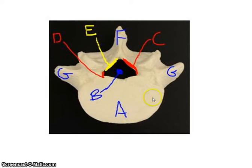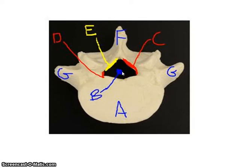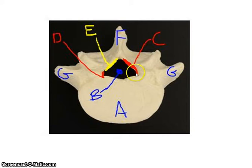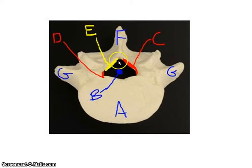Here we have a vertebra. This large area is called the body. The opening where the spinal cord goes through is called the vertebral foramen. Around the vertebral foramen we have the vertebral arch, which can be broken into parts: the pedicle and the lamina.